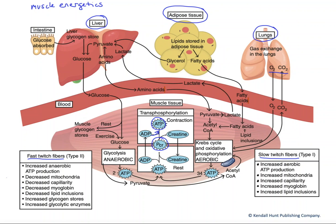We have a couple seconds worth of ATP and another 10 to 15 seconds worth of creatine phosphate. What that tells us is that even at high levels of muscle stimulation, we don't rely on any metabolic pathways other than these stored high energy phosphate bonds to support those initial contractions.